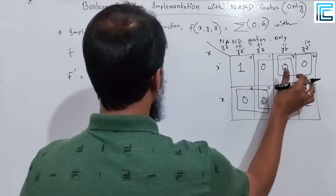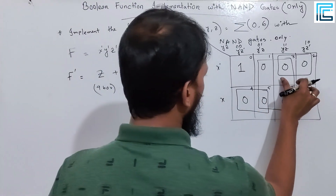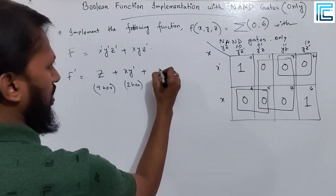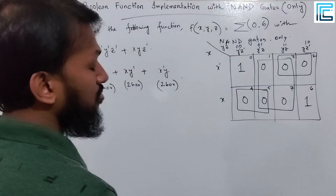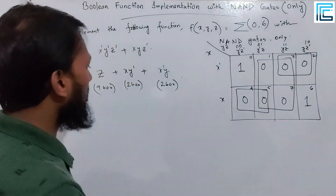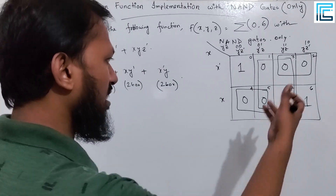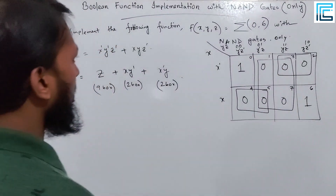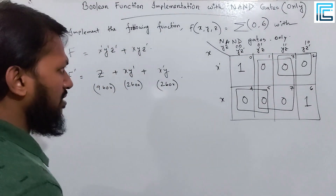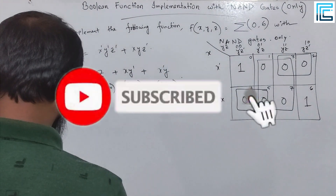Then, the other 2-cell group has 2 variables — the common terms are X' and Y. So the expression is X'·Y. We then combine these values from X. So we have the sum of all the group expressions.